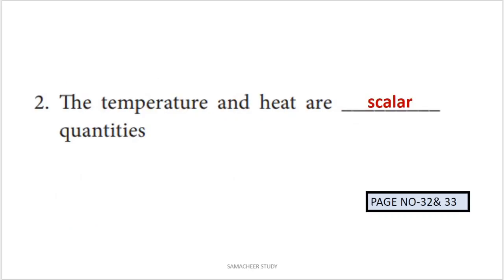Next question: temperature and heat are dash quantities — scalar or vector? Temperature and heat have only magnitude, not direction. Therefore they are scalar quantities, not vector quantities. Read page numbers 32 and 33 for this note.